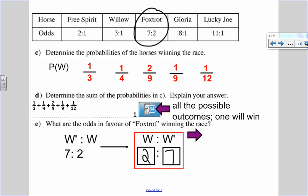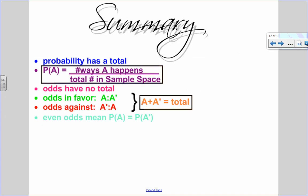So we really need to feel comfortable converting between odds and probability. So let's just look at a summary here. The biggest difference here is that probability has a total. That's why it has a denominator or a fraction. Odds have no total. I really recommend you label your parts of your odds. Odds in favor, start with A. Odds against, start with not A. Remember that that total in the probability is found by adding the number of ways A can happen to the number of ways A can't happen.